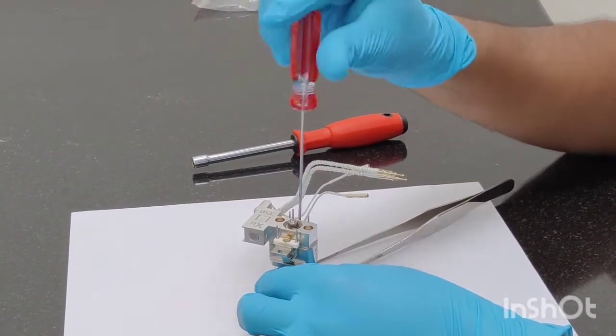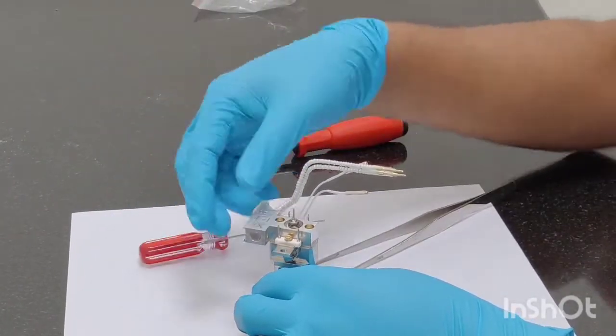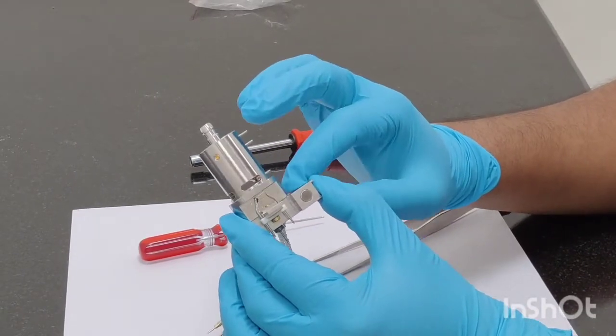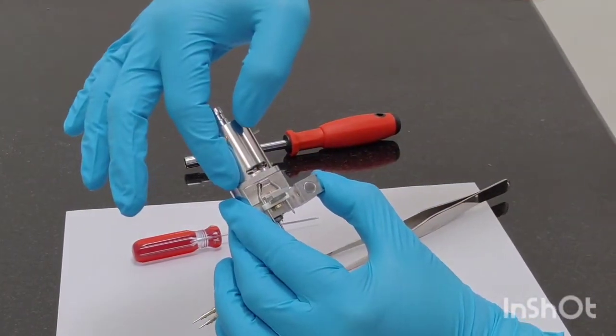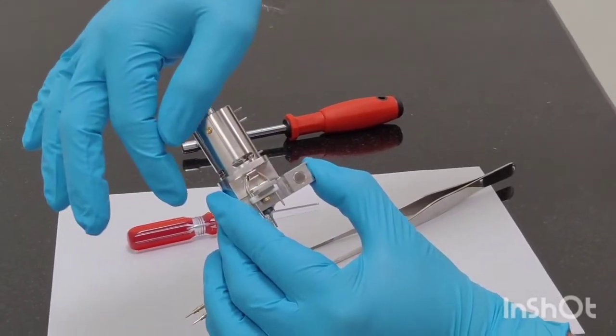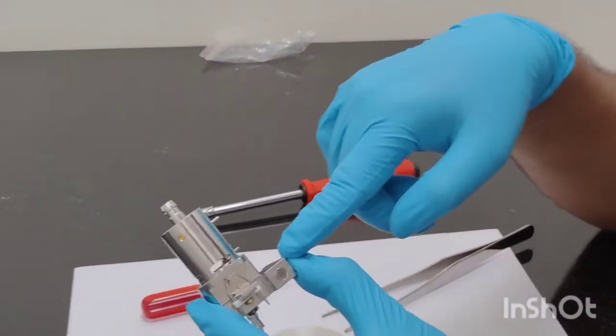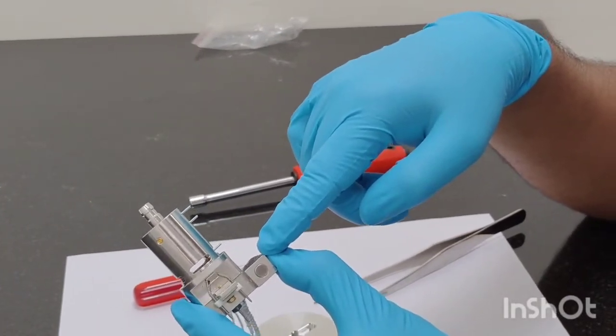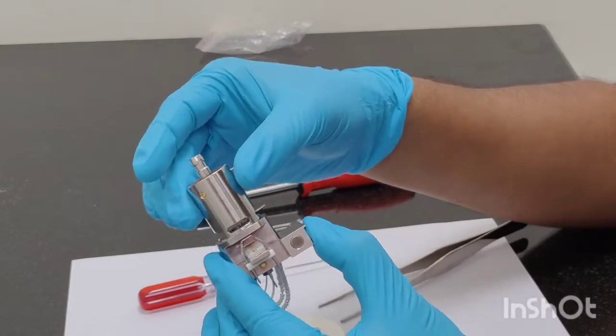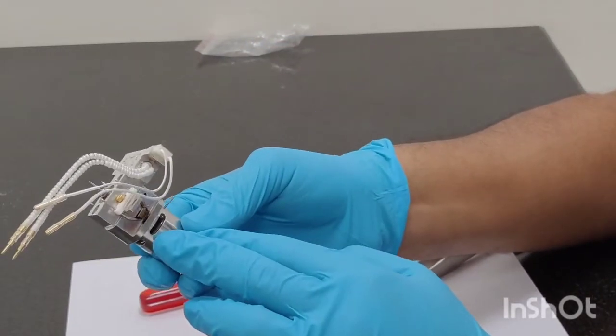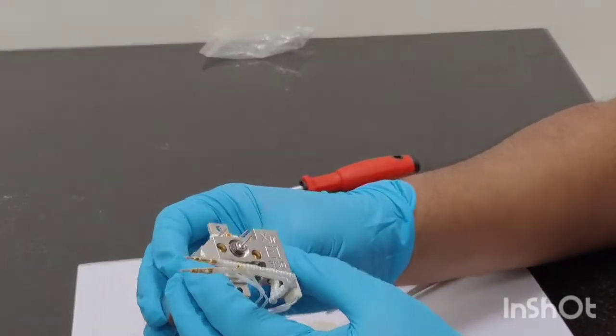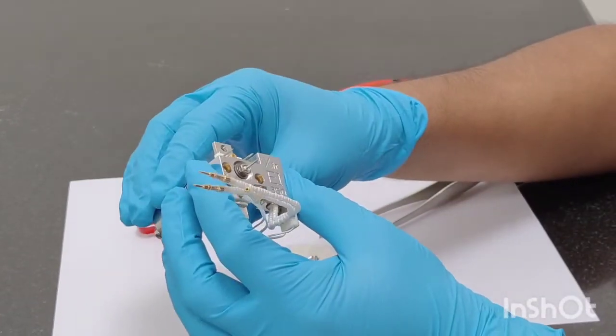One common mistake which happens when we are refixing the filament assemblies is this: that instead of facing the filament portion inside, some of the time we reverse this portion and the filament portion will be facing outside the ion source body. So that is the wrong way to connect. This is the way we have connected, that the filament is facing inside the ion source body is correct. You can see both the filaments are fitted correctly and you have to remember this, this is a common mistake which may happen.